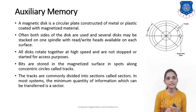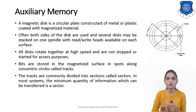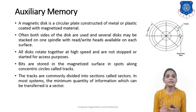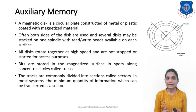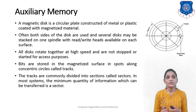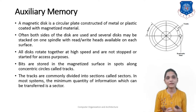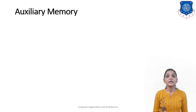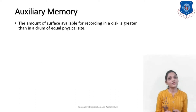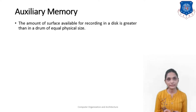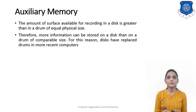In most systems, the minimum quantity of information which can be transferred is one sector. So the disc is divided in terms of tracks, and tracks are further divided in terms of sectors. The circles denote the tracks and the smaller arcs denote the sectors. At a time, only the content of one particular sector can be accessed or stored.